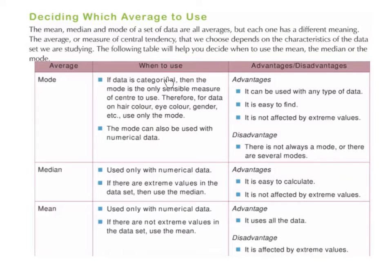If the data is categorical, so categorical meaning word data, then the mode is the only sensible measure of center to use. Therefore for data on hair color, eye color, gender, etc., use only the mode. The mode can also be used with numerical data.